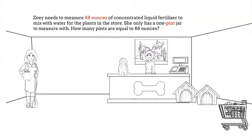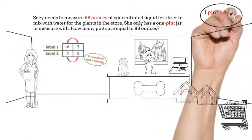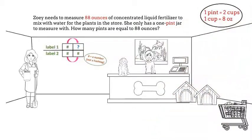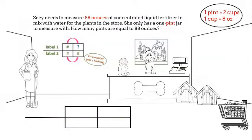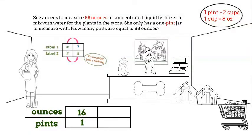Do you want to help me with another measurement conversion? I need to measure 88 ounces of concentrated liquid fertilizer to mix with water for the plants in the store. I only have a one pint jar to measure with. How many pints are equal to 88 ounces? Remember, we'll use our graphic organizer and you need to remember that 1 pint is 2 cups and 1 cup is 8 ounces. Since 2 times 8 is 16, that means that 1 pint is 16 ounces. We'll set up our graphic organizer as ounces to pints and have 16 over 1. Since the 88 is ounces, it will go in the numerator and x will go in the denominator.